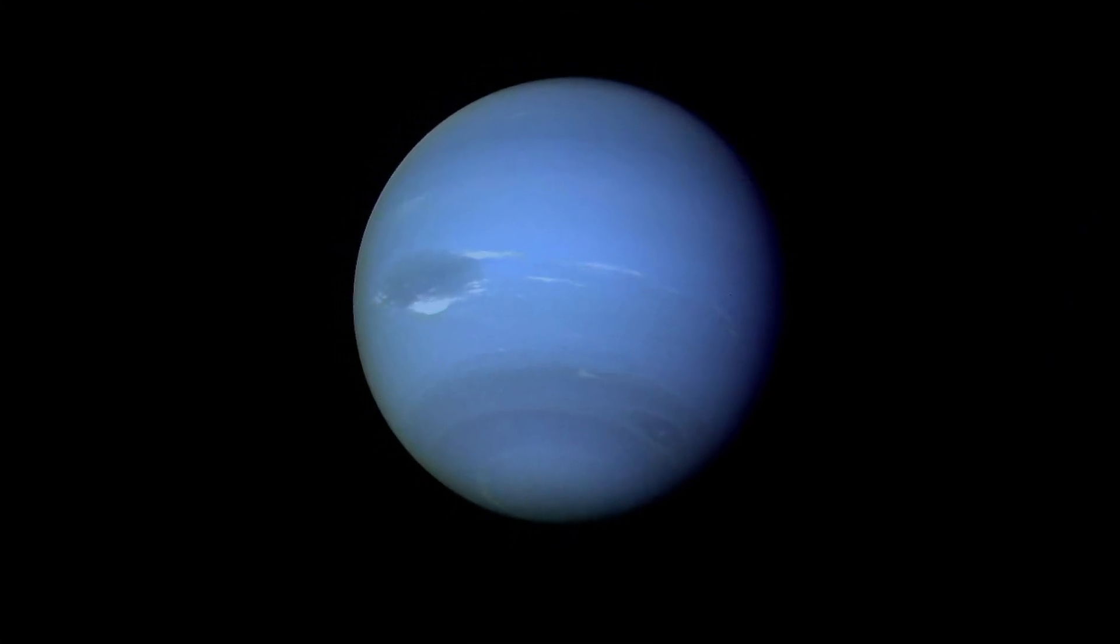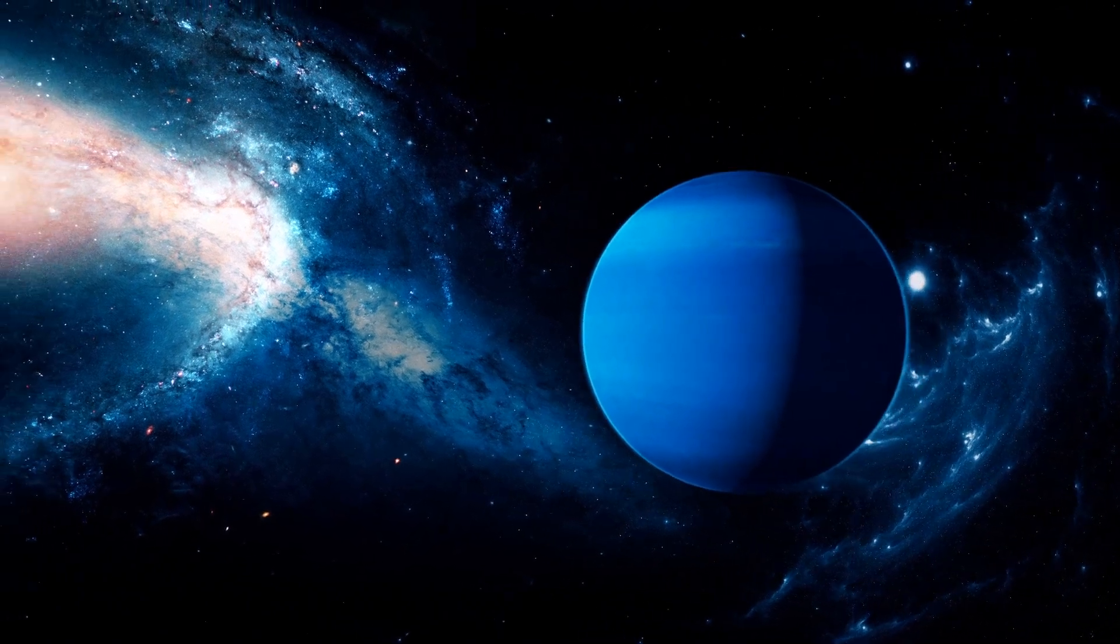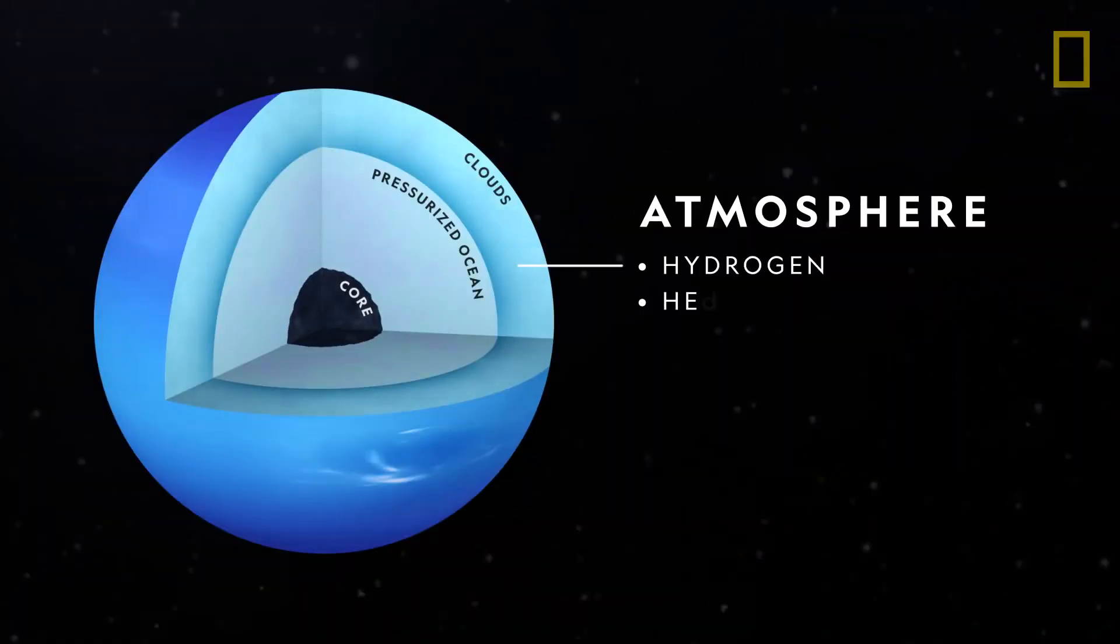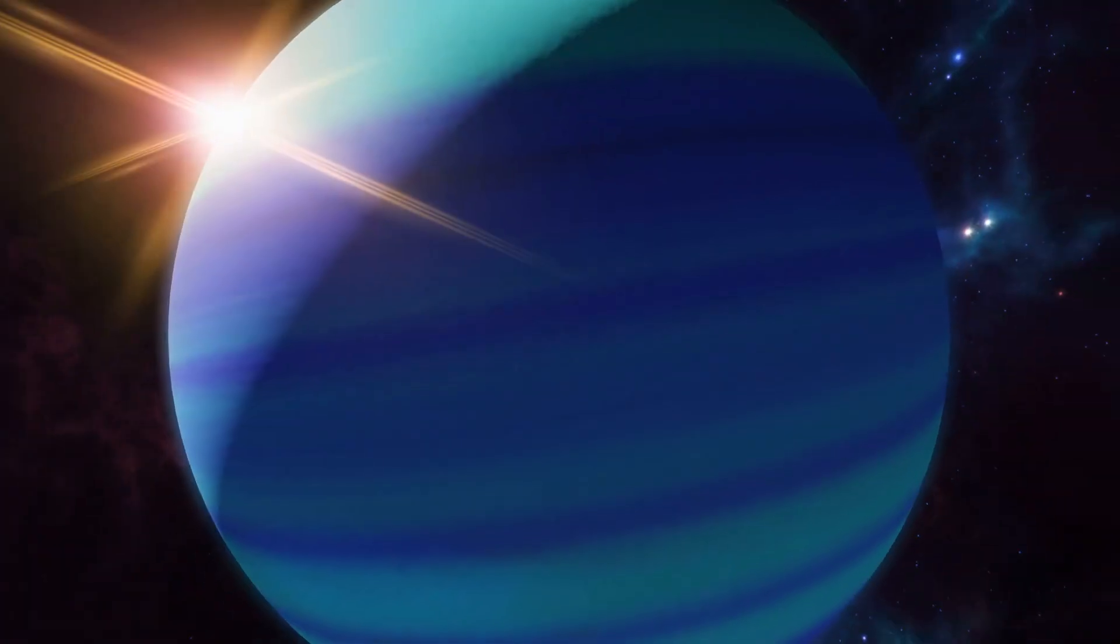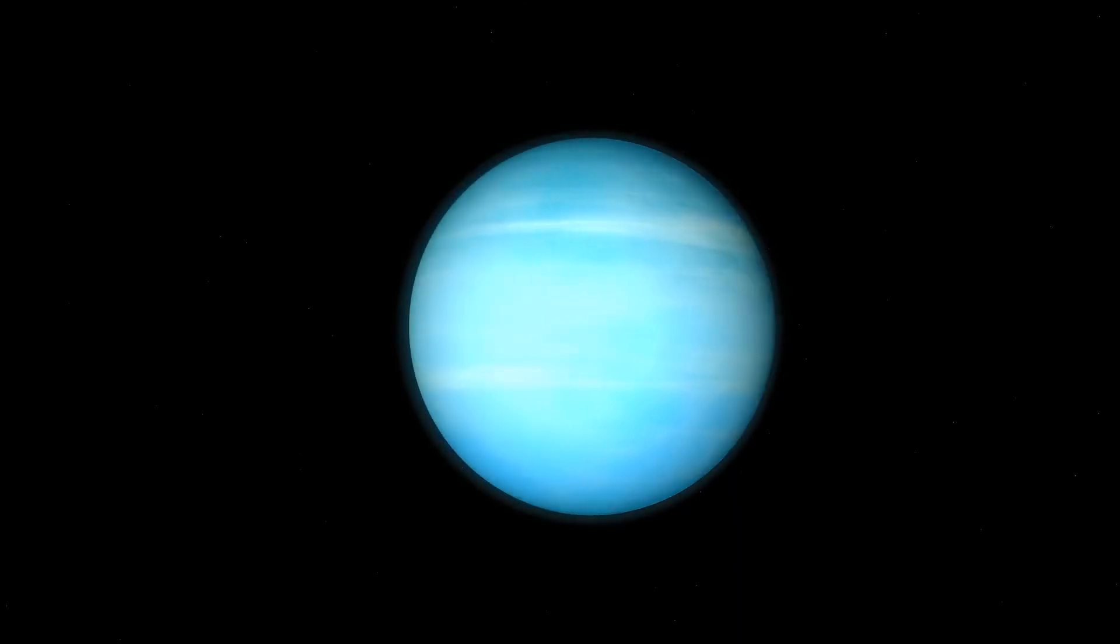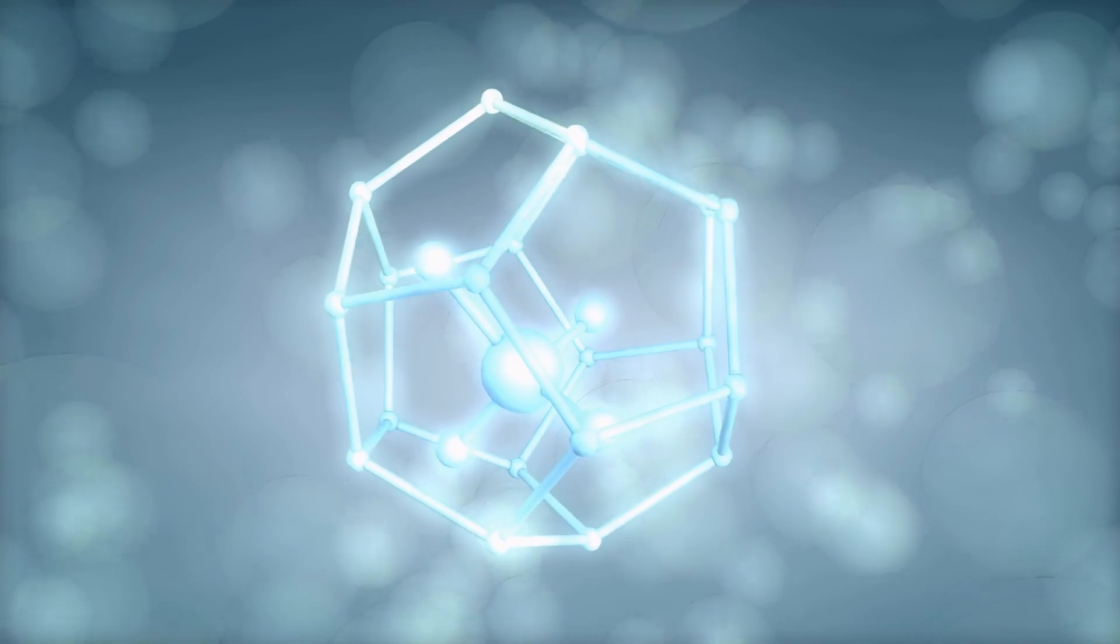Neptune is known as an ice giant due to its interior chemical composition. Neptune is significantly richer in elements heavier than hydrogen and helium than Jupiter and Saturn. Neptune appears notably blue in images captured by the Hubble Space Telescope at visible wavelengths due to small amounts of gaseous methane.